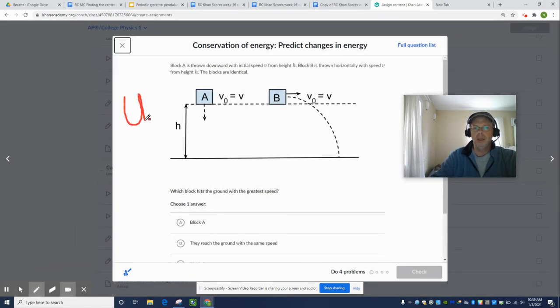They both have the same change in gravitational potential, Mg delta H. Delta H is the same for both of these.